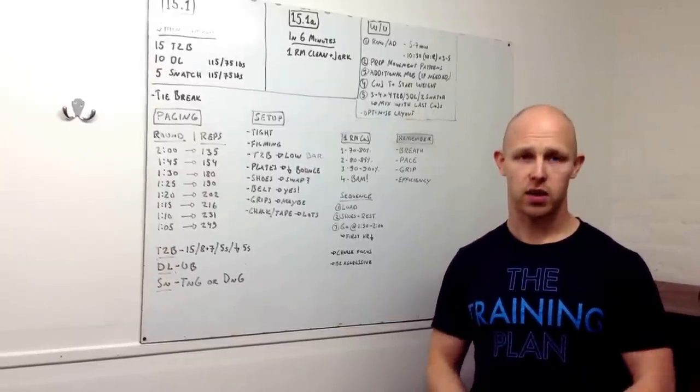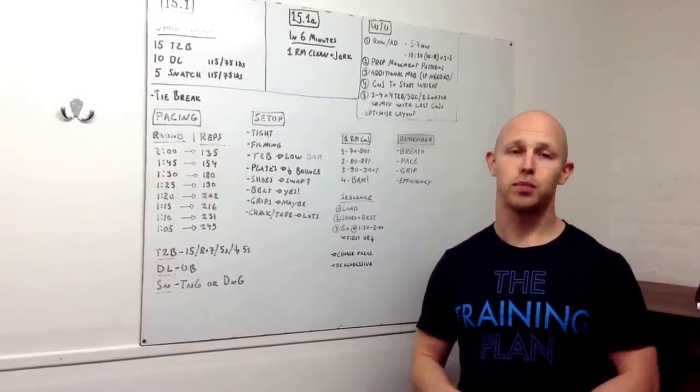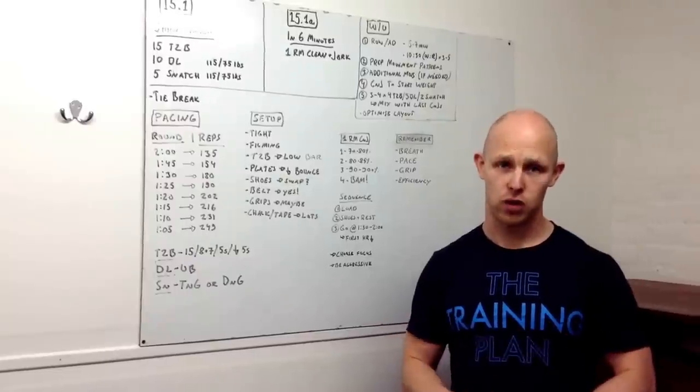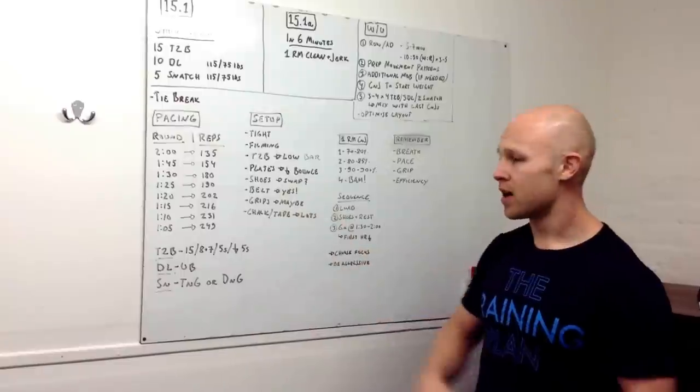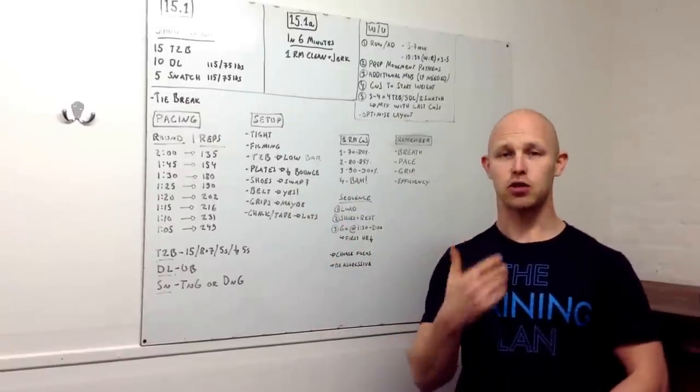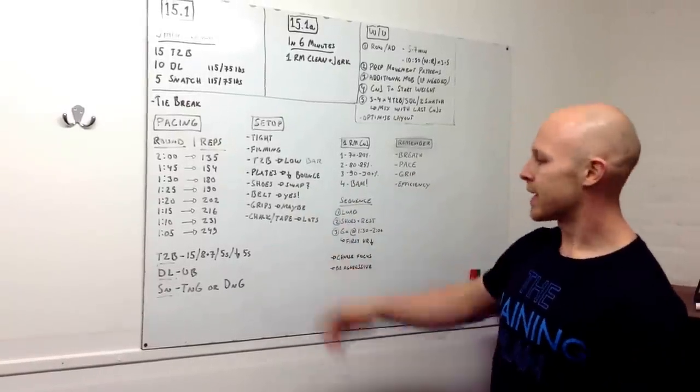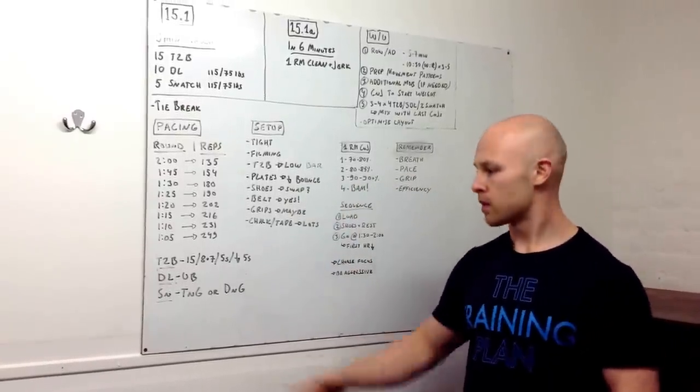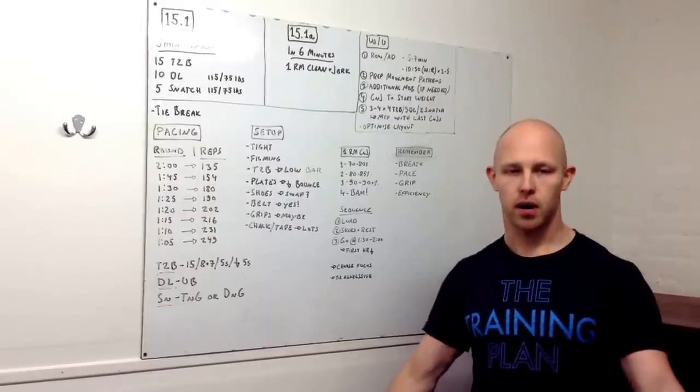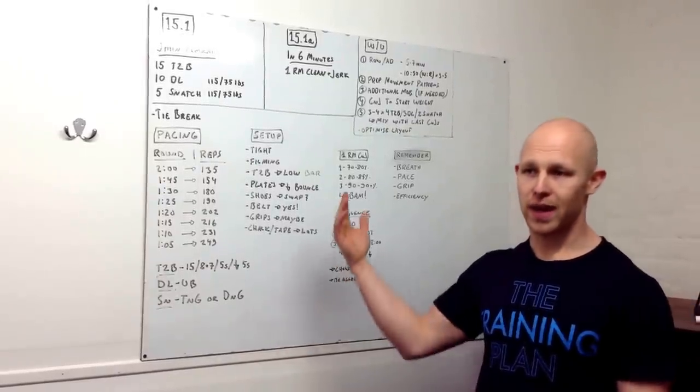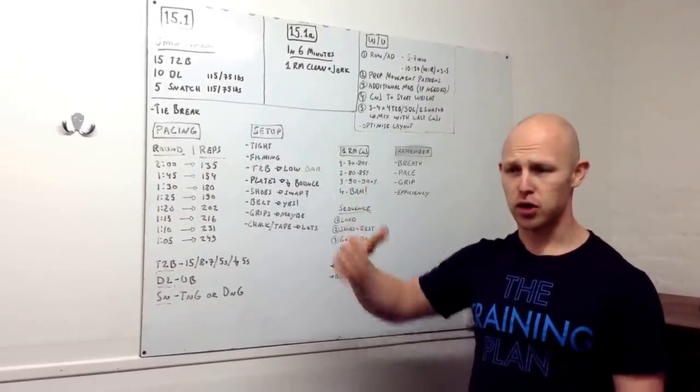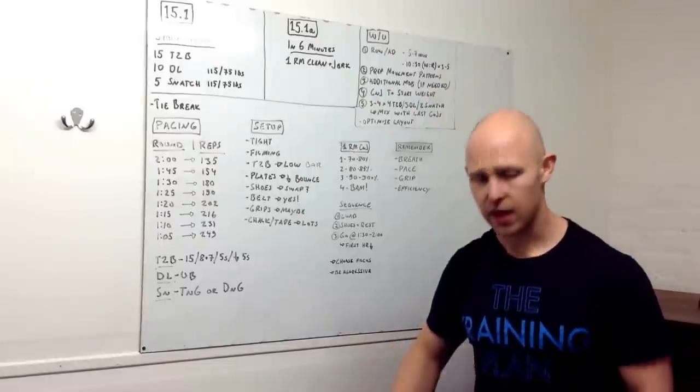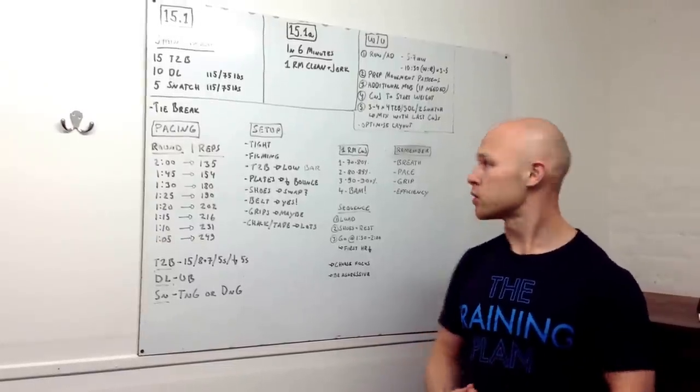And then efficiency. Keep the bar close. Keep your arms nice and straight. This is one of those pieces where mechanical inefficiency is going to cost you. On the toes-to-bar, don't use long lever. Knees to chest, little kick. Deadlift, keep the bar nice and close. And then snatch, same thing. Keep the bar nice and close. Keep the arms straight. On the way down, elbow comes forward so that you don't end up doing this kind of thing, swinging and losing the balance in front of you.